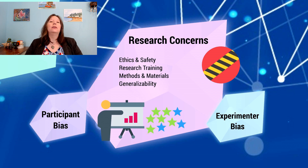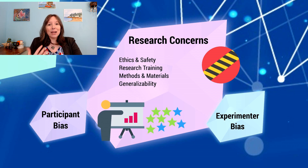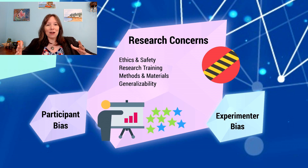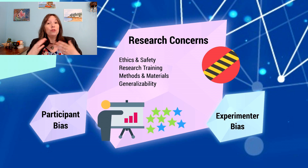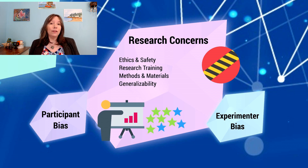Regardless of the research design, we have to think about certain concerns. We've already mentioned ethics and safety, but when you're getting ready to do a training — say you're going to take a group of people into a lab, do a driving simulator, and offer them brownies that may or may not contain cannabis — there's a lot of research training involved. You want to make sure your research assistants say the exact same thing to the groups when they pass out the brownies, and that they get the same training on the driving simulator. Even if you're just doing an online survey, you need to train people to analyze and distribute it properly.